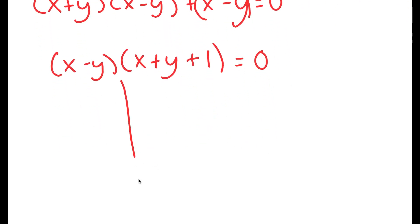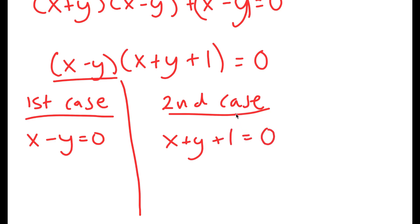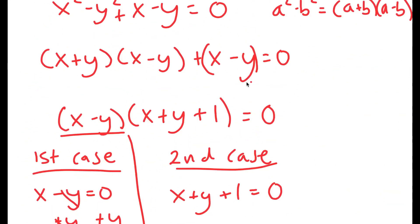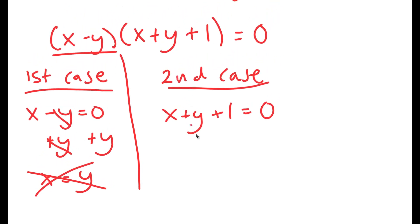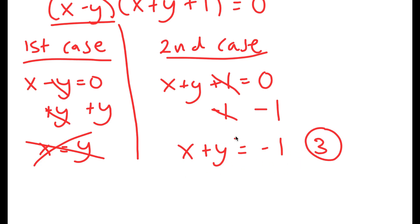This gives me two cases. For my first case, x minus y equals 0, which means x equals y. But remember, x cannot equal y — that was our precondition — so this case cannot be used. From the second case, x plus y plus 1 equals 0, subtracting 1 gives x plus y equals negative 1. We'll call this equation 3.